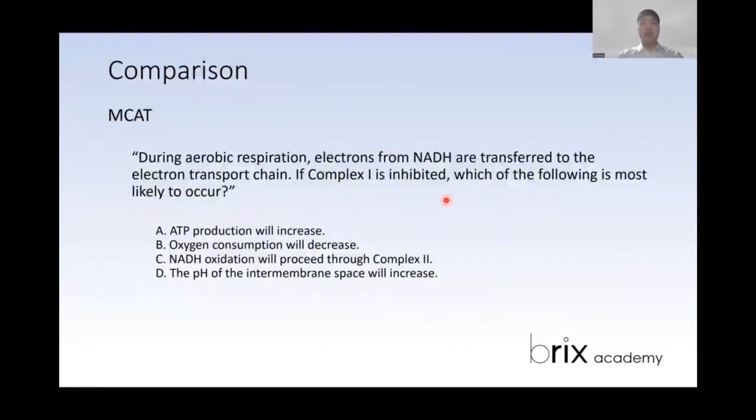Here the answer is going to be B, oxygen consumption will decrease. Because complex one is inhibited, this chain doesn't work. If this chain doesn't work, it doesn't need the final electron transport acceptor. That means the oxygen will not be used. As you can see, the DAT is very much just knowledge and recall, where the MCAT requires you to connect the chain, connect the dots of a bigger picture.